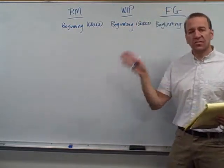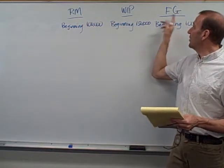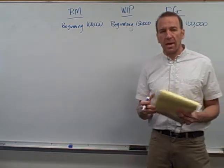Now let's just see how costs flow through our system. Once again, raw materials, work in process, finished goods, they're all inventories. They're all assets on our balance sheet.